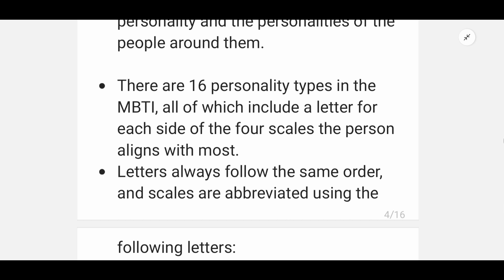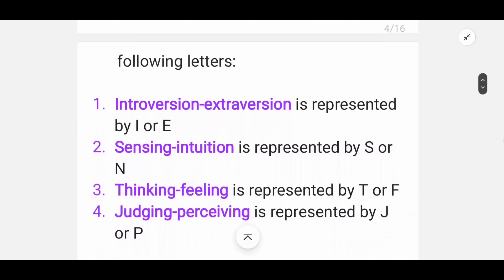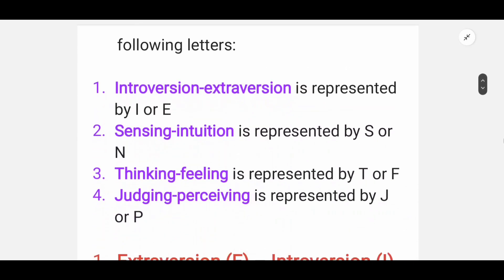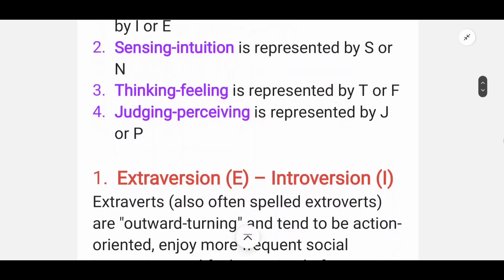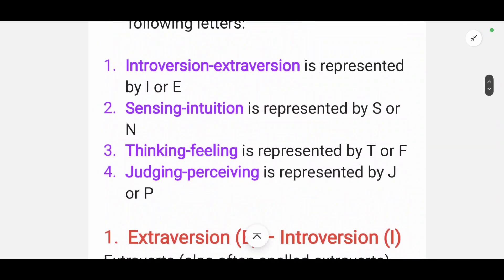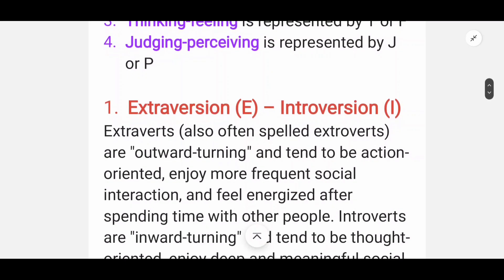They assigned letters to each side of the four scales: Introvert and Extrovert represent I and E; Sensing and Intuition represent S and N; Thinking and Feeling represent T and F; and Judging and Perceiving represent J and P. On this basis, they identified 16 personality types.